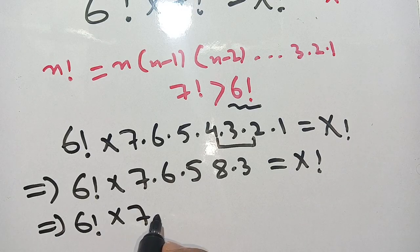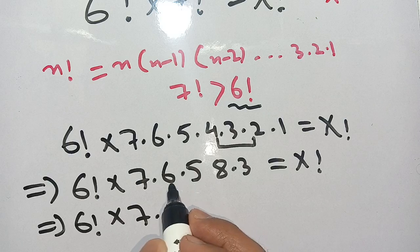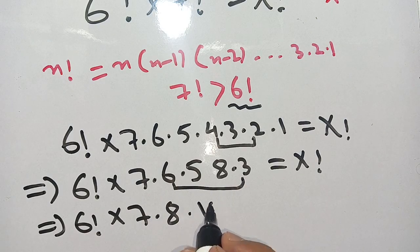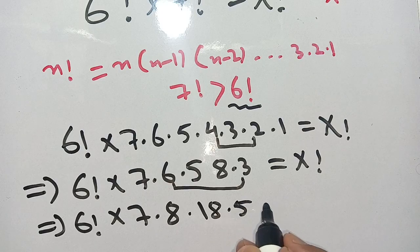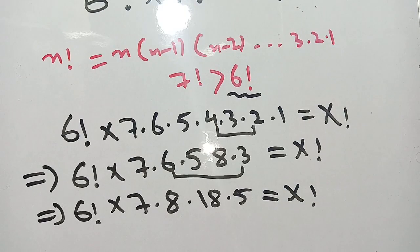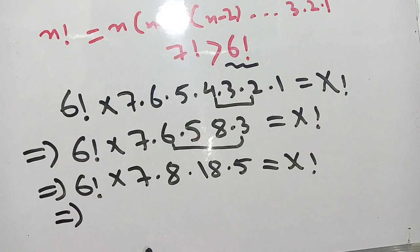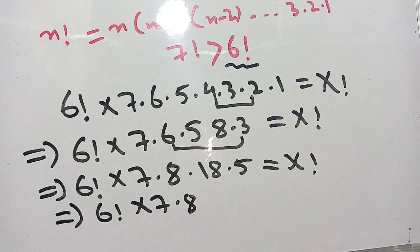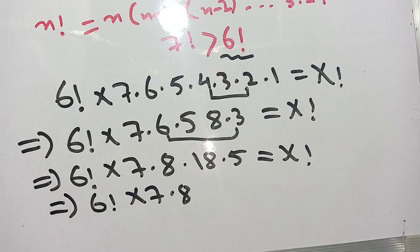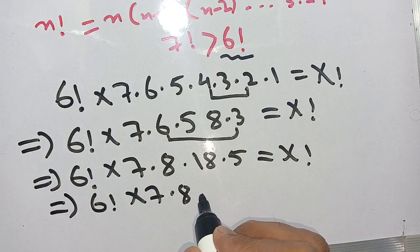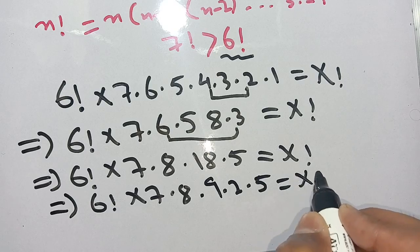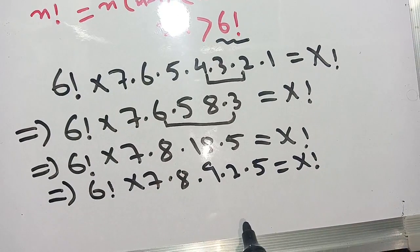Now in the next step we can write this as 6 factorial times 7 times 8. We can write 18 as 9 times 2, times 5, equal to x factorial.